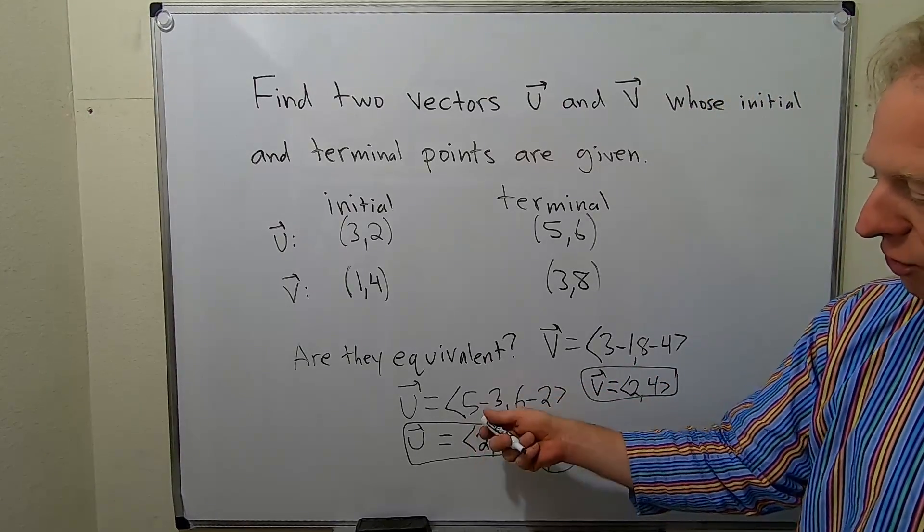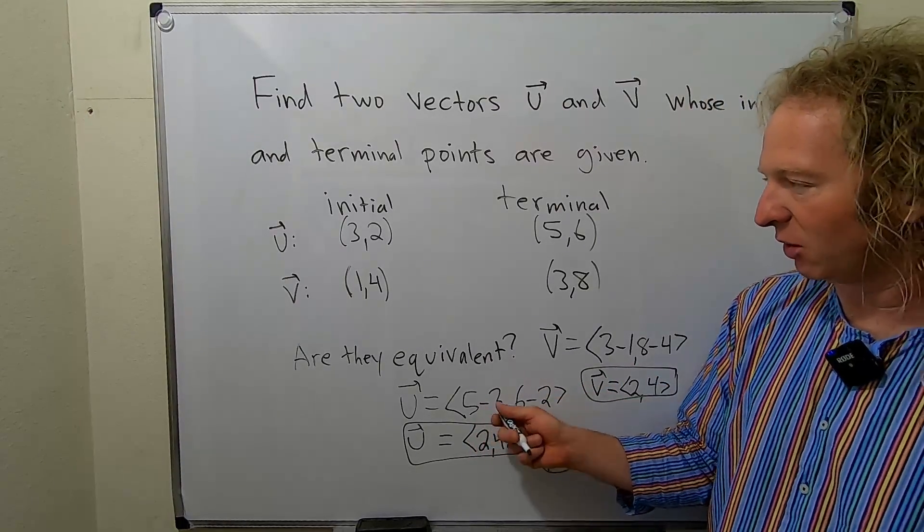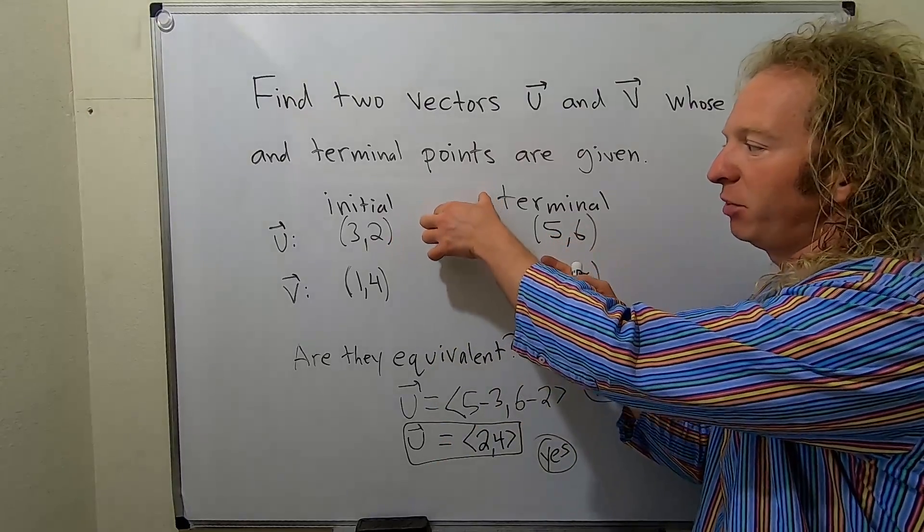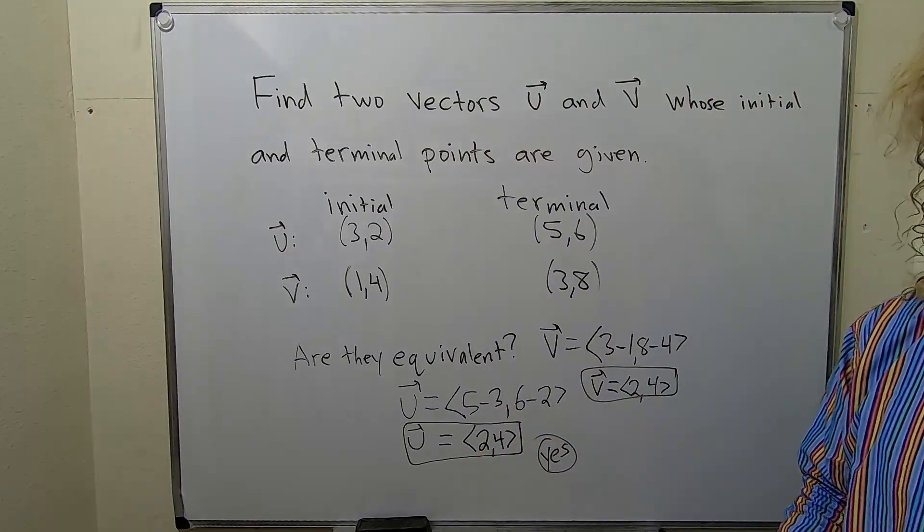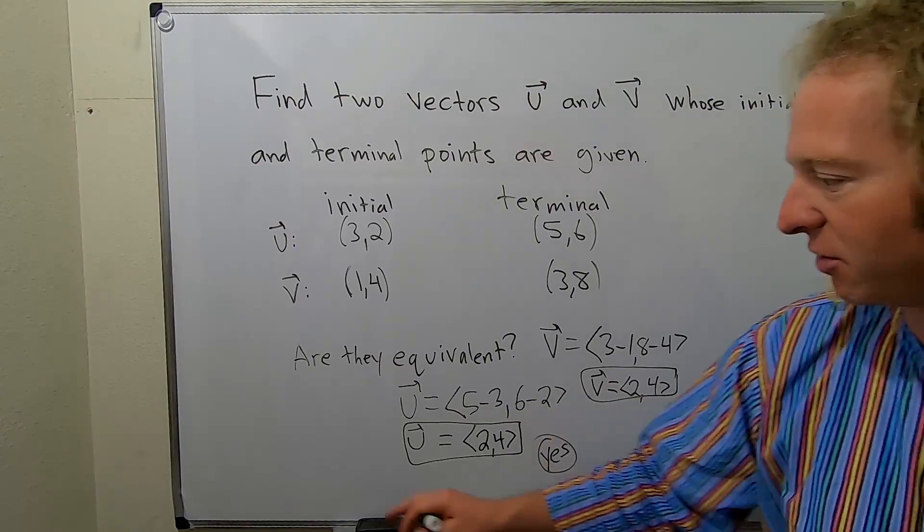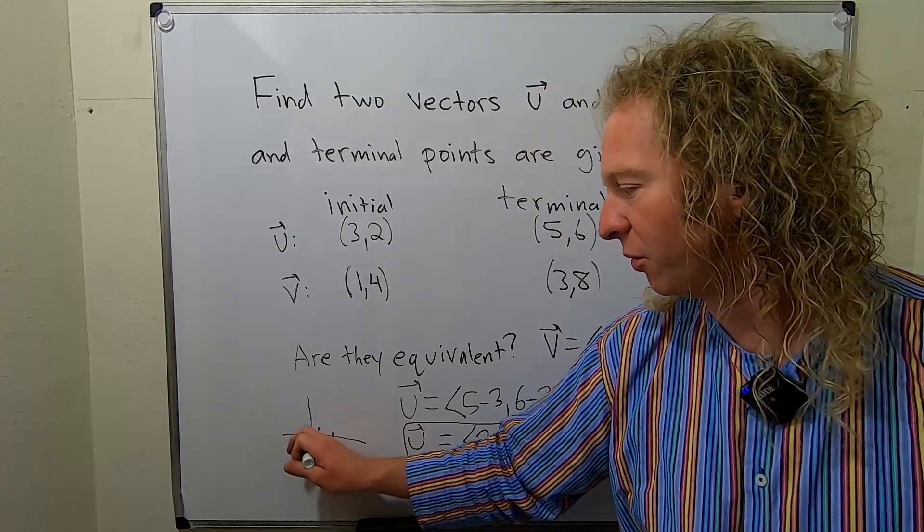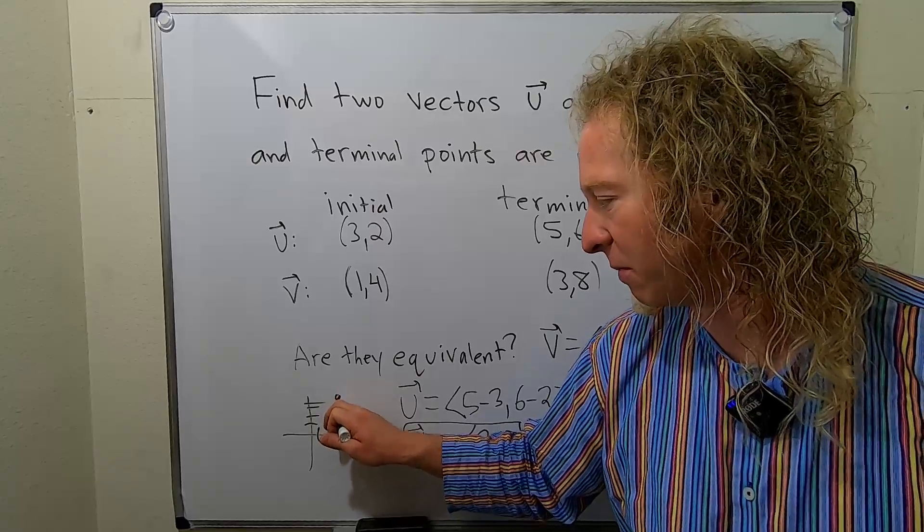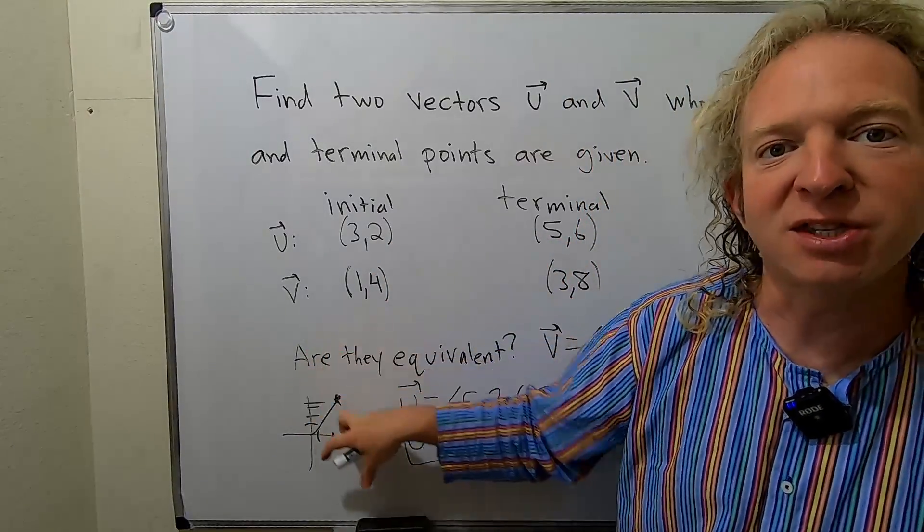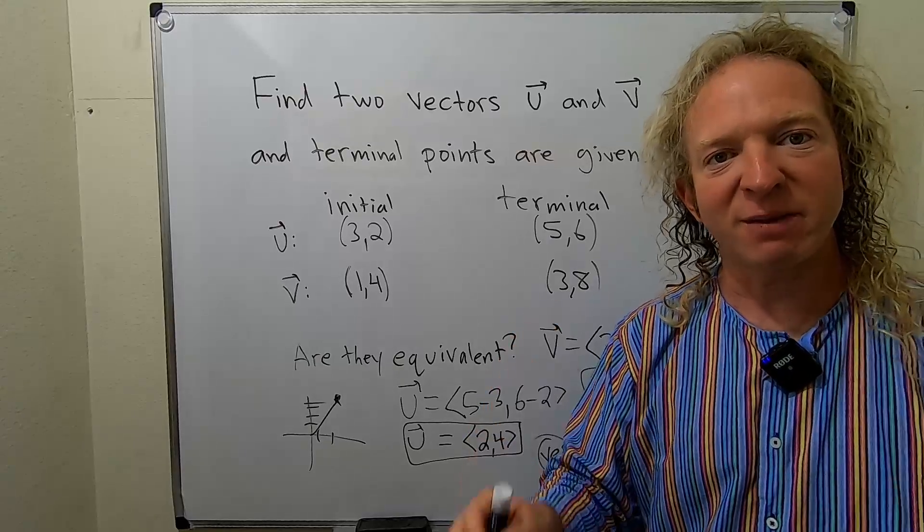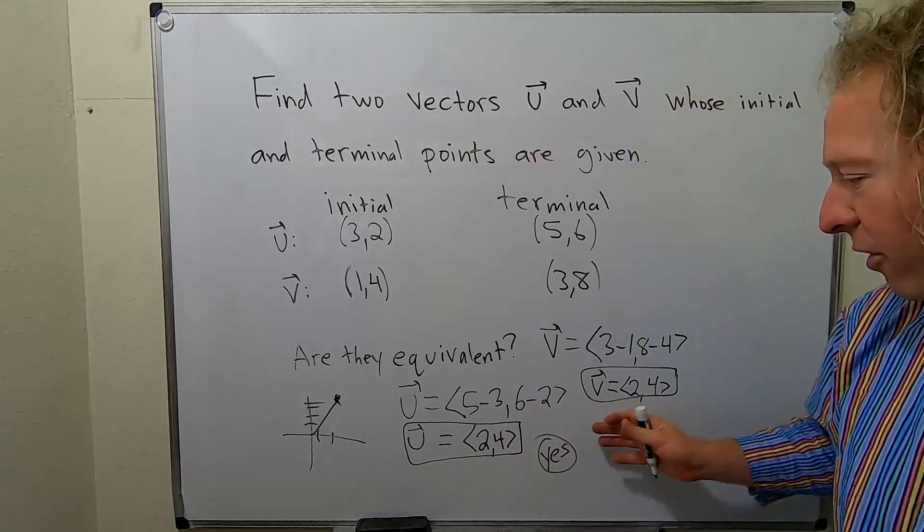So this is a vector whose initial point now is at the origin. So we took this vector in the plane, and we kind of shifted it down to a vector whose initial point is at the origin. So if you were to sketch this vector, it would look like this, 1, 2, 1, 2, 3, 4. And so that would be the vector. So these vectors here are the same, except they're in different places on the plane. But they all have the same length and direction, therefore they're equivalent.